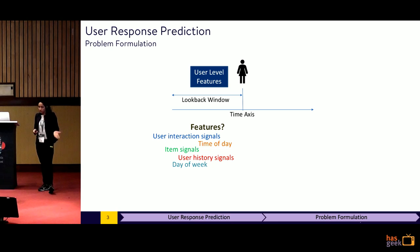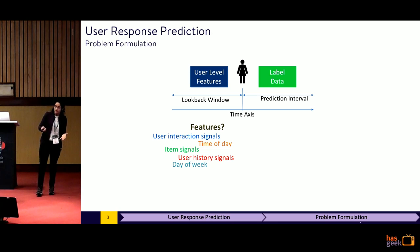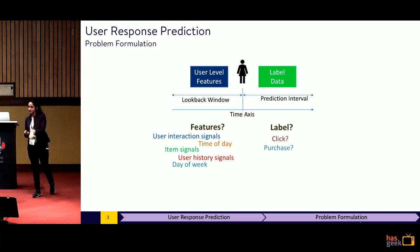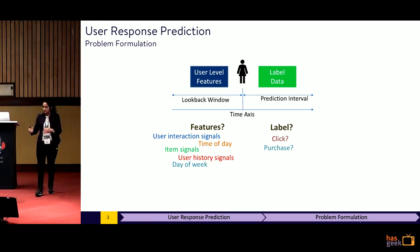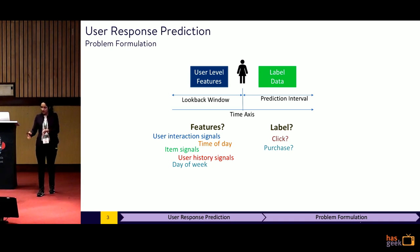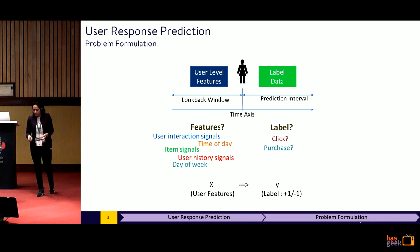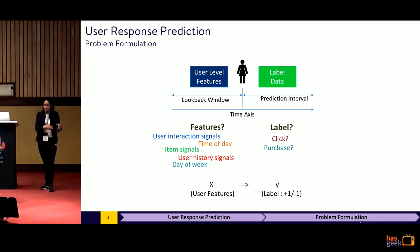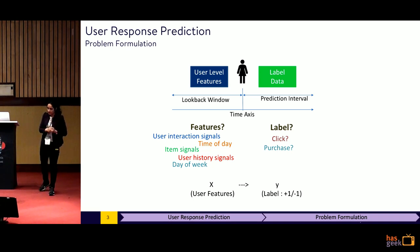Now we've built the user features. The next part is getting the labels itself. We define a prediction interval — say, I want to predict if in the next seven days the user is going to purchase from my site. If the purchase actually ends up happening, the label is plus one. If the purchase does not happen, the label is minus one. At the end of this exercise, I have a dataset with user features X and labels Y. This is a binary classification setting where the label could be either plus one or minus one.